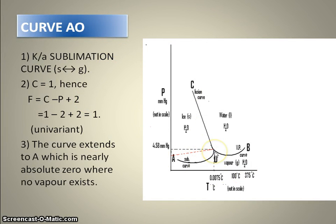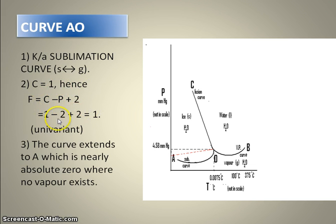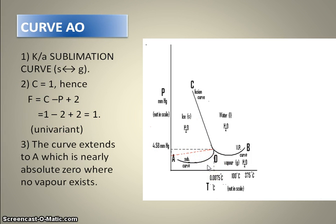First, we come to curve AO. Curve AO is known as the sublimation curve, because here ice and vapor both exist in equilibrium with each other. We are studying a one-component system, H₂O, so C = 1. Applying Gibbs phase rule with 2 phases (ice and vapor), we get degree of freedom equal to 1. This system is univariant — meaning we can only change one variable (pressure or temperature) while the other is fixed.